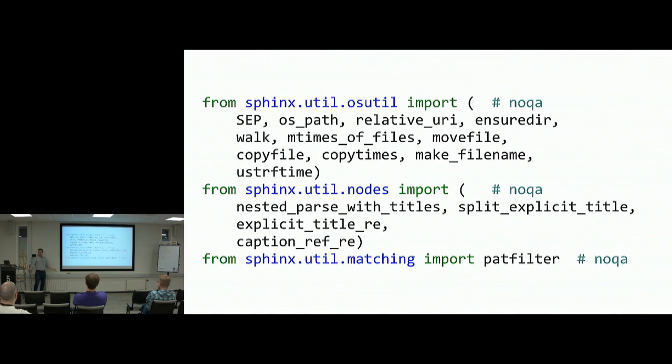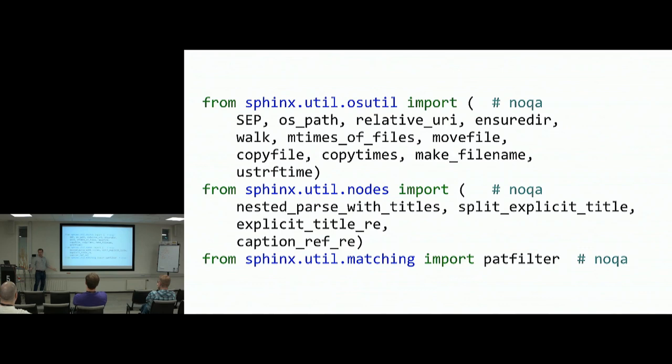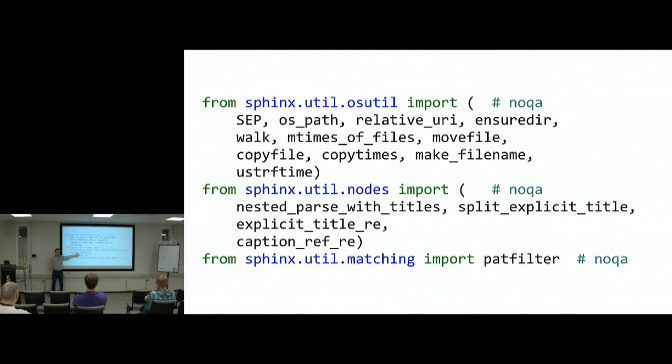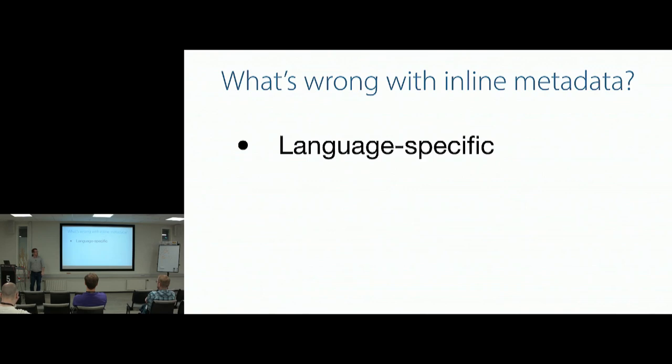Almost everybody has seen examples of these embedded directives. Most programming languages have something like this — a '# noqa' comment in Python that some tool parses and says, don't apply linting to this line. We use the mechanisms of the language plus an external tool to parse it and figure out what to do. This is an example of embedding directives, and it works — we see it used in all sorts of tools — but it has some problems.